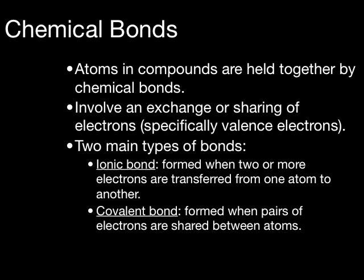A covalent bond, on the other hand, is formed when pairs of electrons are shared between atoms. While this bond is fairly stable, it is much weaker than an ionic bond. Ionic bonds are always going to be stronger than covalent bonds.